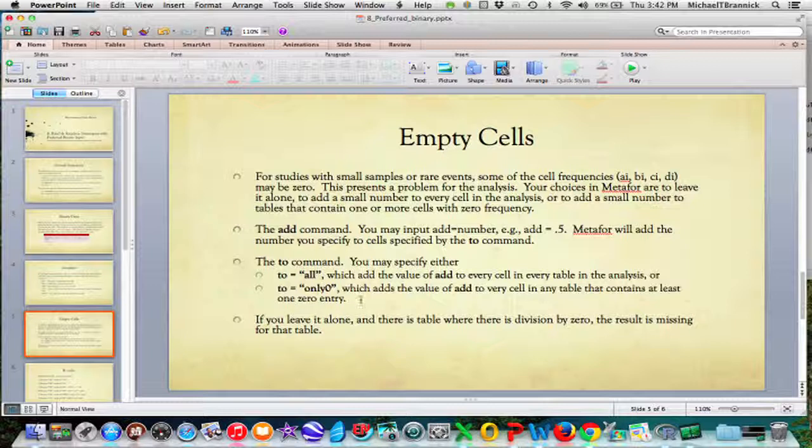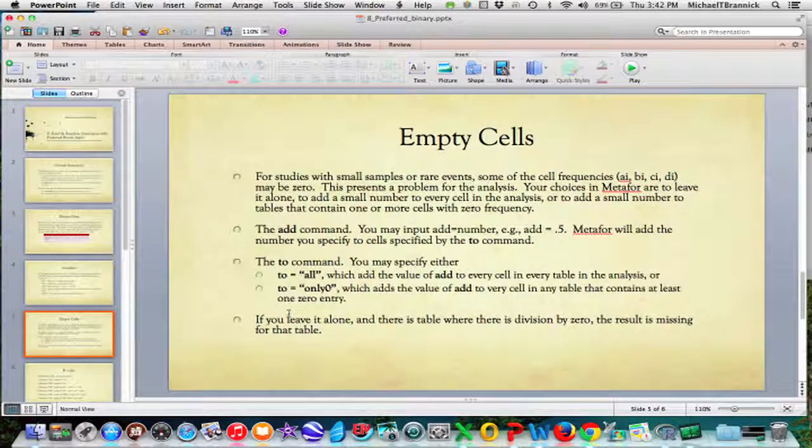If you leave it alone and don't have the add and the to, then if there's a division by zero, the result is set to missing and gets kicked out.